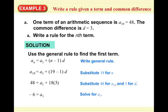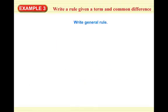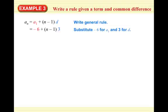Now we know A1 and D, so we can get the general rule. A_N equals A1 plus (N minus 1) times D. Substituting A1 equals negative 6 and D equals 3: we get negative 6 plus 3N minus 3, which simplifies to negative 9 plus 3N. That is our rule for the nth term.